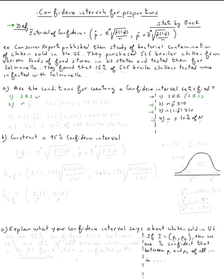So n p hat, what is n, we want to make sure it's bigger or equal than ten. n is 525, right there. And then p hat is 0.15, 15 percent. So let's use the calculator. Supposed to be equal 78.75, which is bigger or equal than ten.